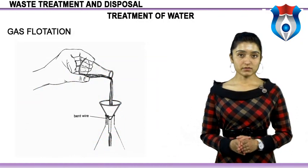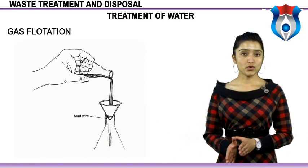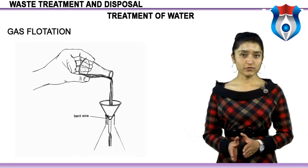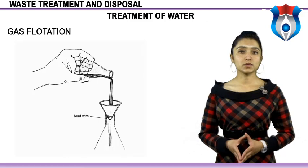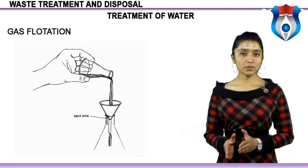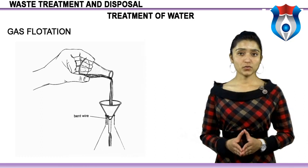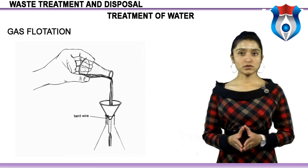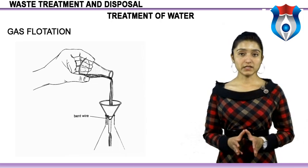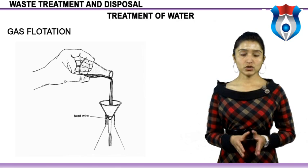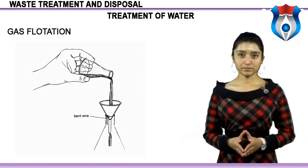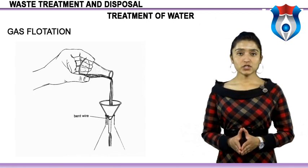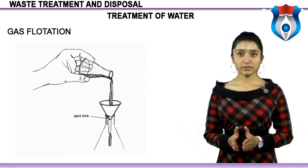Gas flotation: suspended oil droplets can also be removed from water by gas flotation. If gas bubbles are passed through an emulsion of oil and water, the oil droplets will attach to the bubbles and be carried to the top of the mixture where they can be easily removed. Air bubbles are normally pumped through the water, although the expansion of dissolved air is also used. Gas flotation is often aided by the addition of chemical coagulants. Carbon dioxide has also been used as the flotation gas, however gas flotation can create foam that is difficult to break.